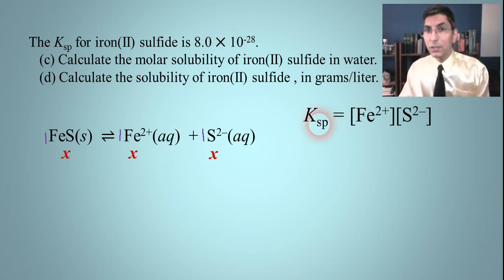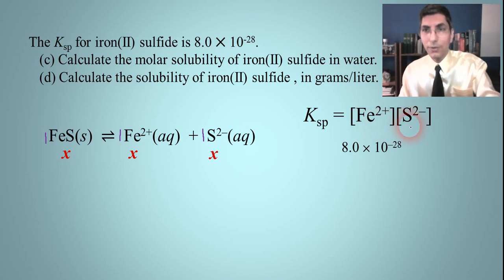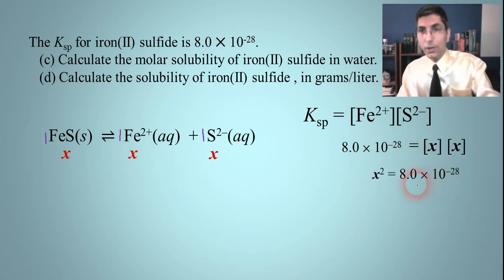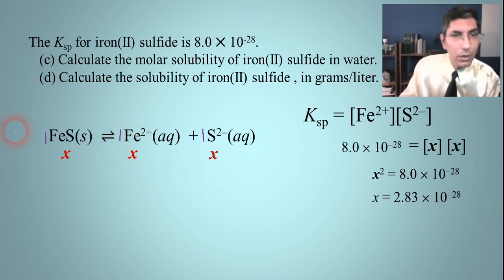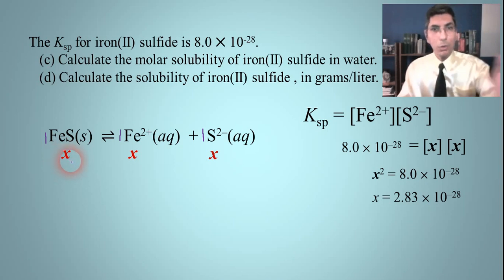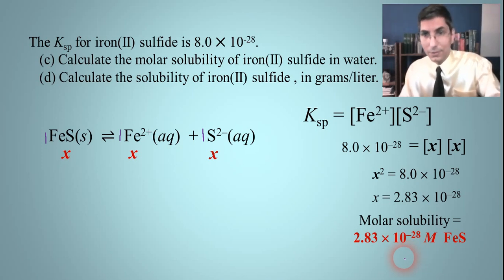In the last problem we were solving for Ksp, but this time we know it. Ksp is 8.0×10⁻²⁸, and both the iron ion and sulfide ion concentrations are X. So we have X² = 8.0×10⁻²⁸. Taking the square root, X equals 2.83×10⁻¹⁴. That means the molar solubility of iron(II) sulfide is 2.83×10⁻¹⁴ moles per liter. It's very insoluble — that's hardly anything at all.